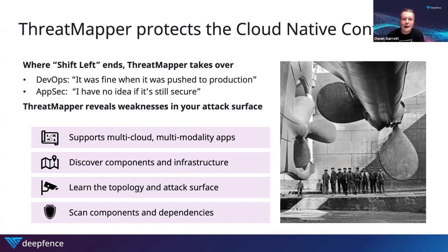We take over where the shift-left initiatives that your DevOps team end. Shift-left is a great series of initiatives to ensure that code pushed into production is believed to be secure and reliable. But so many times, code is pushed into production and in some way it can degrade. Vulnerabilities can be found, issues can happen, and it falls to the application security team responsible for those production platforms — to be sure: is that application still secure? Are attacks under way? Am I at risk?